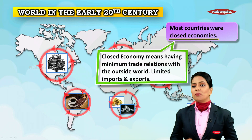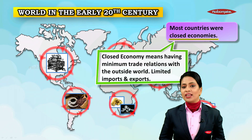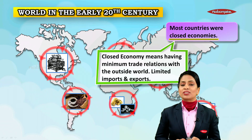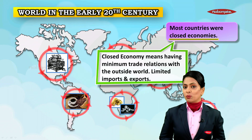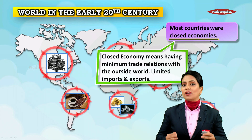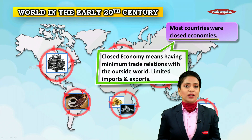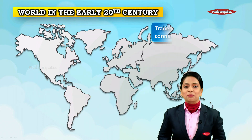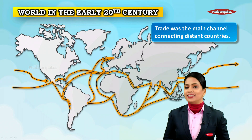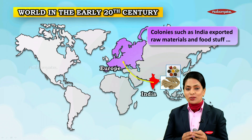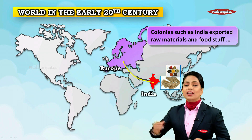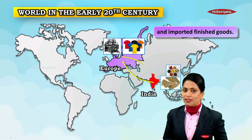India specialized in the production of agro-based commodities. Most countries were closed economies, meaning these economies had minimum trade relations with the outside world — limited imports and limited exports. Except for essential goods, contact with the rest of the world was kept to a bare minimum. Trade was the main channel connecting distant countries.